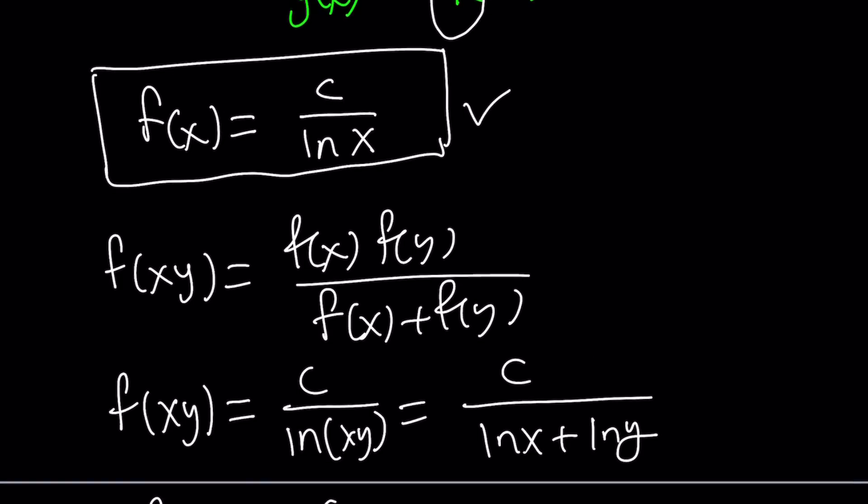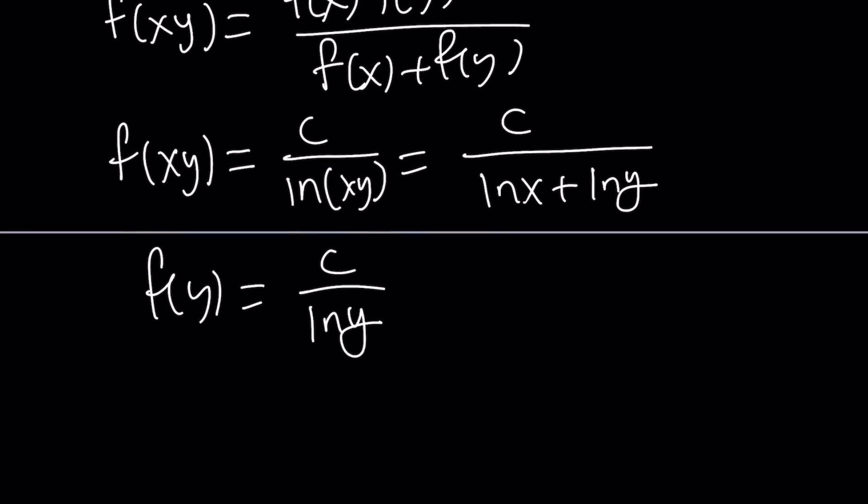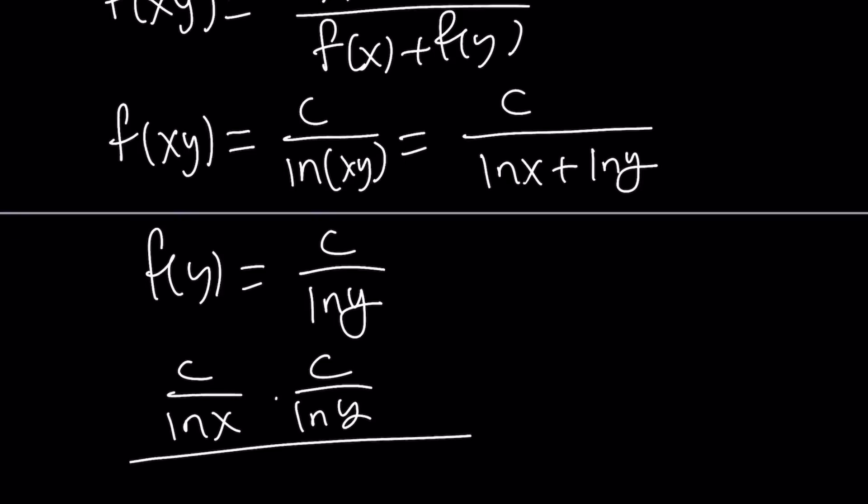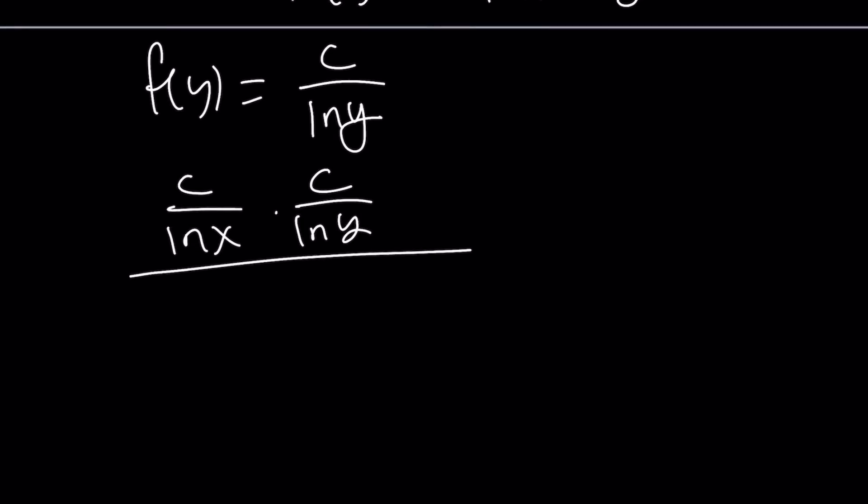And f of y is c over ln y by definition, because that's f of x. And now, we can go ahead and plug everything in. Let's go ahead and do it on the right hand side and see if we're going to get the expression on the left hand side. f of x, c over ln x times c over ln y divided by f of x, which is c over ln x plus c over ln y.